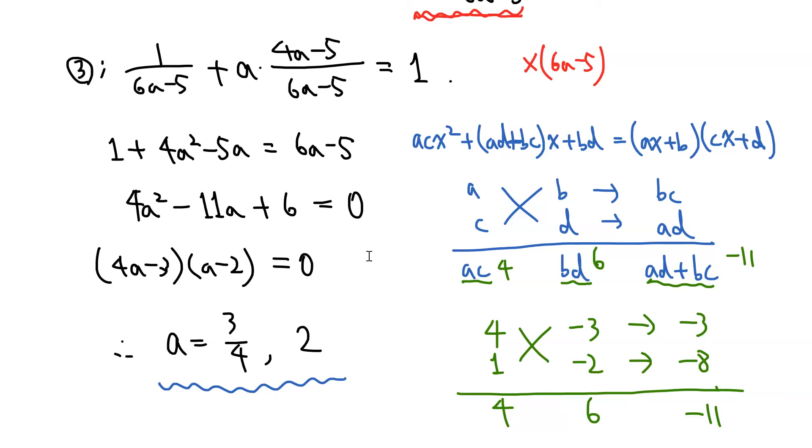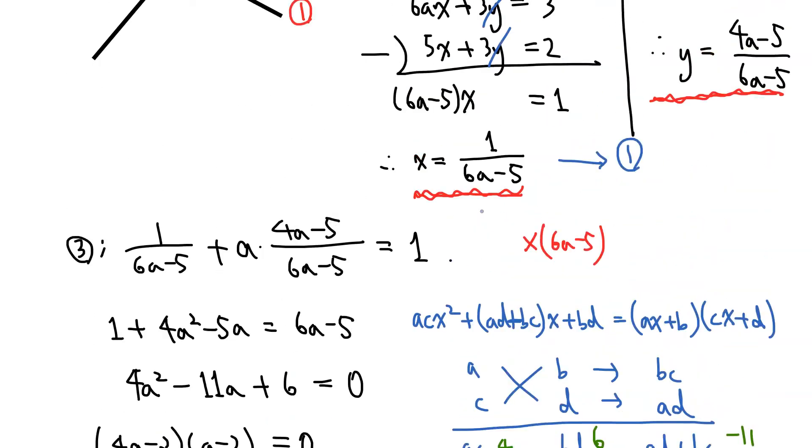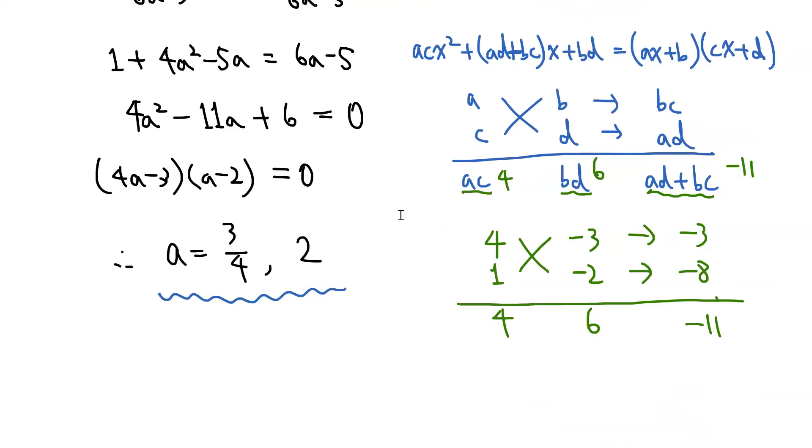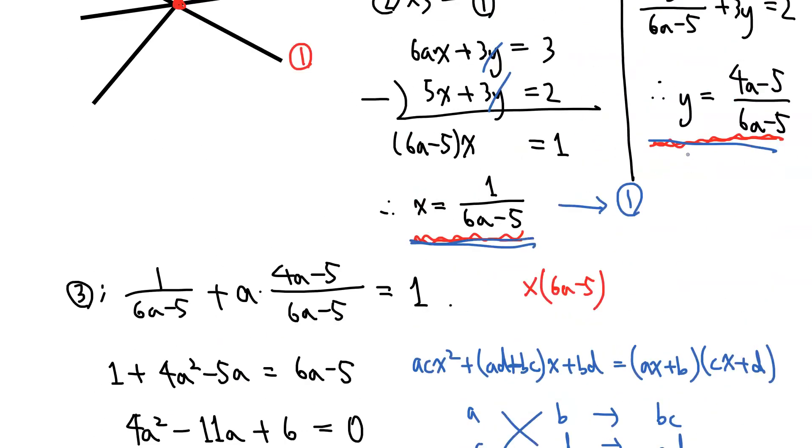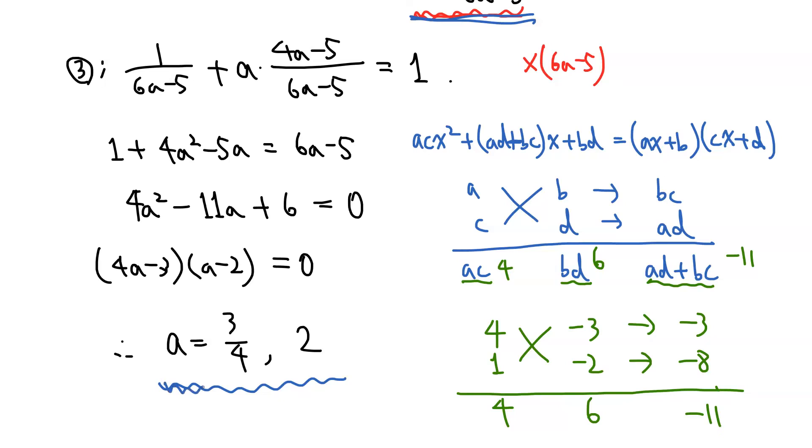And because X and Y are actually given in fractional form, we have to check our answers. Both of these values do not make the denominators of these expressions 0. And so therefore, they are valid solutions. So we have found two values in this case.